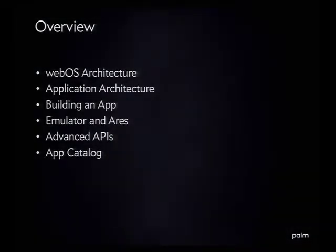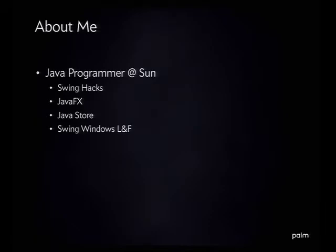If you want to learn more about ARIES, there's an ARIES session tomorrow. If you want to learn more about the PDK, there are several PDK sessions tomorrow. We're going to cover the architecture of webOS itself, the application architecture, drop into some actual code and build an app on stage, go over ARIES a little bit, and then talk about the advanced APIs. And finally, the app catalog — the most important part of our platform, because that's where you guys can sell your apps and make money. You do not need anything more than basic programming and HTML skills. Everything else we are going to teach you today and tomorrow. Our goal is that by the end of this weekend, you will be able to build your own app and put it in the catalog and start making some money.